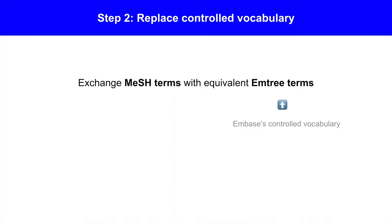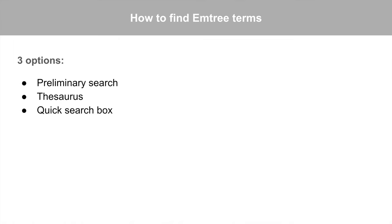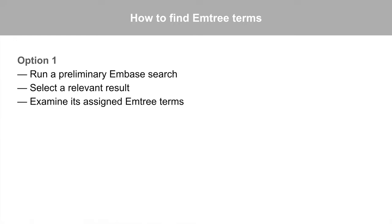Step 2: Replace the controlled vocabulary terms. Exchange the strategy's MeSH terms with their equivalent mTree terms. mTree is Embase's controlled vocabulary system. To find a MeSH term's corresponding mTree term, there are three options. Option 1: Run a preliminary Embase search, select a relevant result, and then examine its assigned mTree terms.